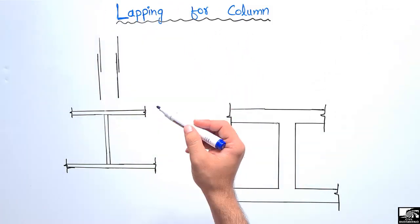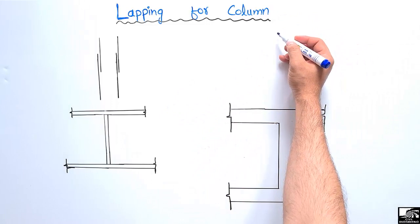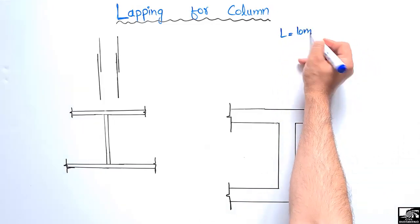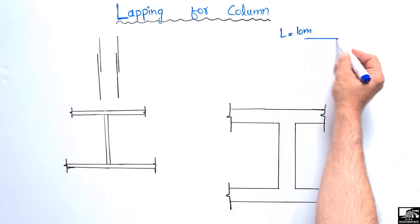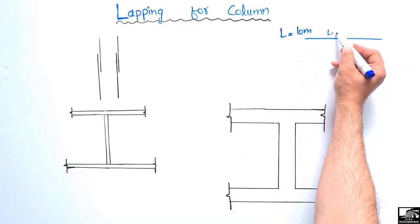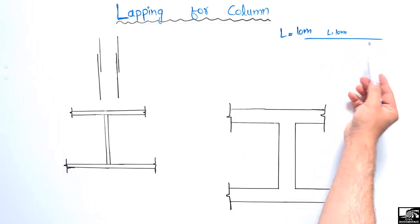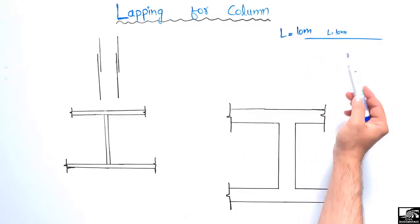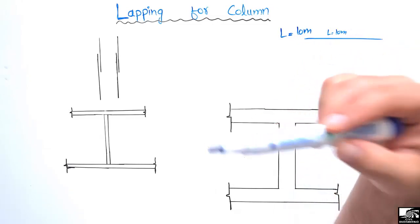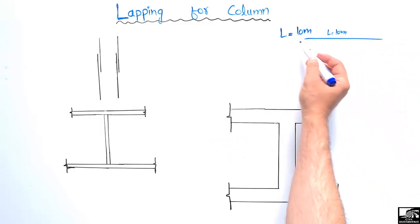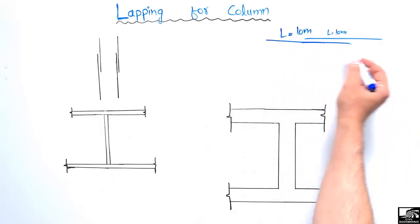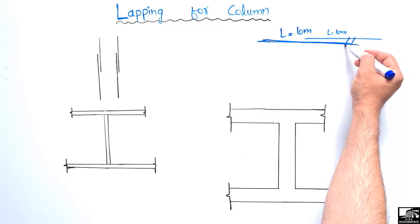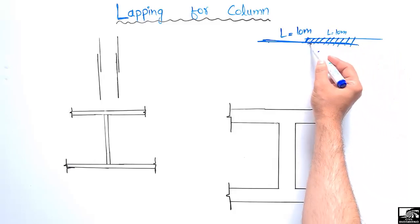First of all, what is lapping and why do we need lapping? The maximum length of the bar provided from the factory or company is 10 meters. When we take this bar from the factory, on site we want to lap this bar in order to use it in structures, because a high-rise building may be 200 meters tall. So we have to lap the steel bar in order to transfer the load to the lower stories of the building.